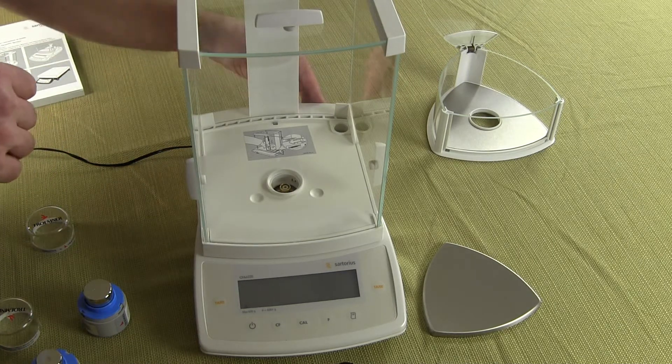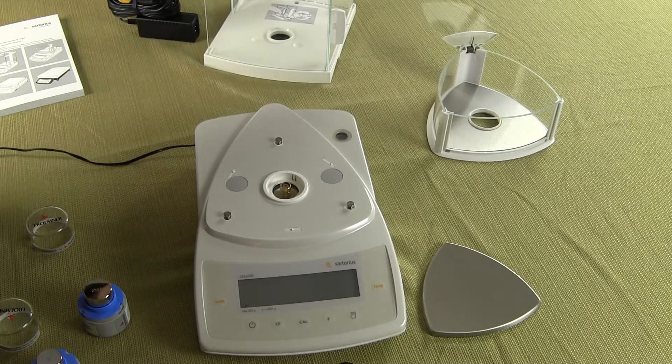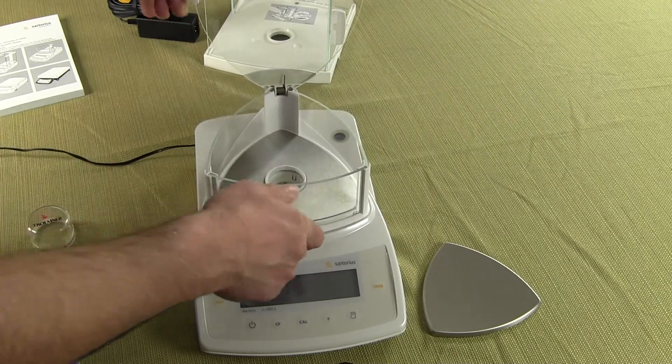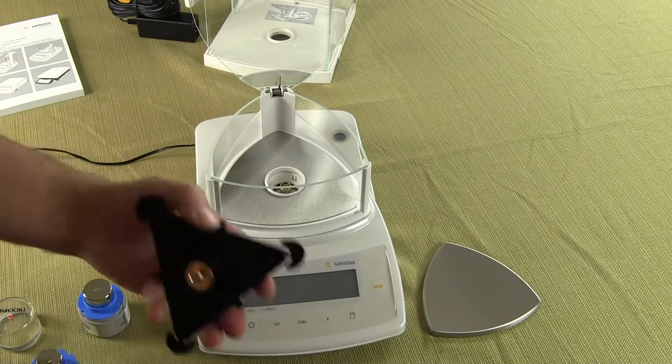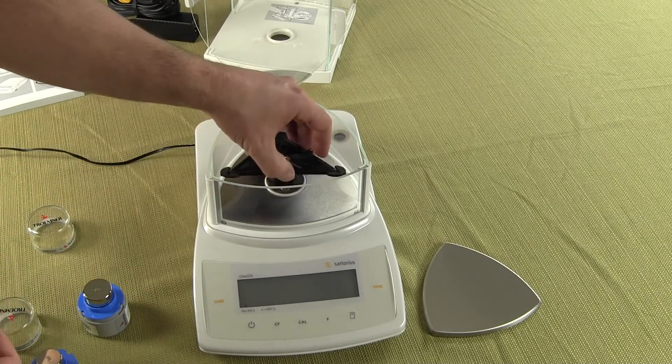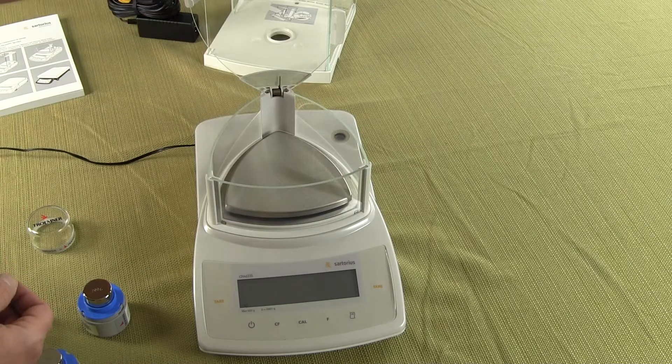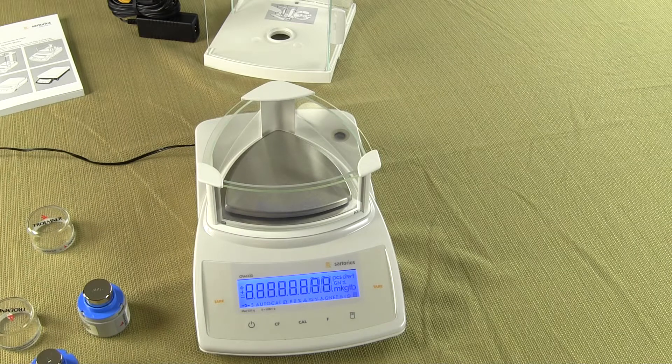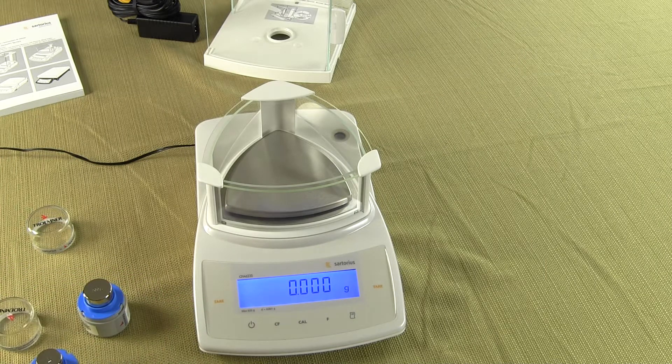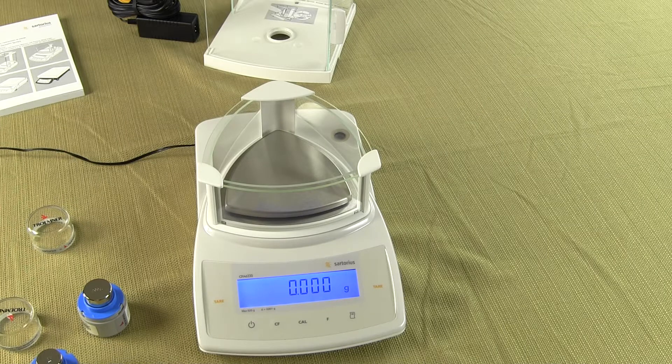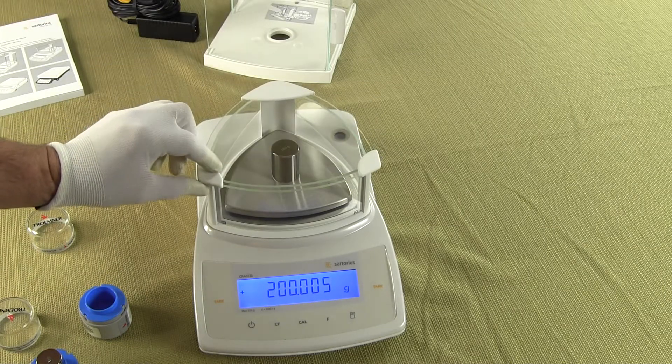So I want to remove this for a minute and I just want to throw this draft shield back on for a second. And then simply once again the pan support, then the weigh pan, we can power up the balance. When you power up the balance again one simply presses the tare key to zero it out. And again for any kind of weighing application you would just open up the draft shield, put the item on, close the door.